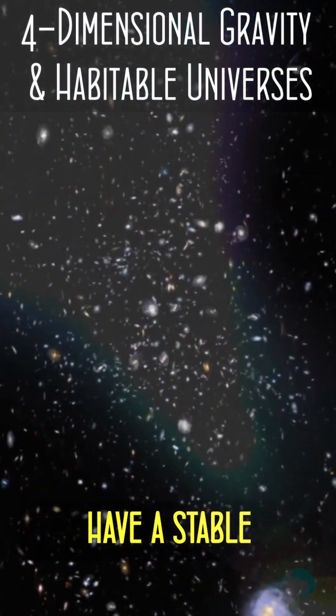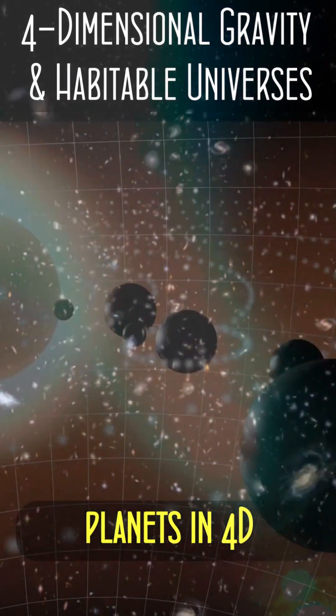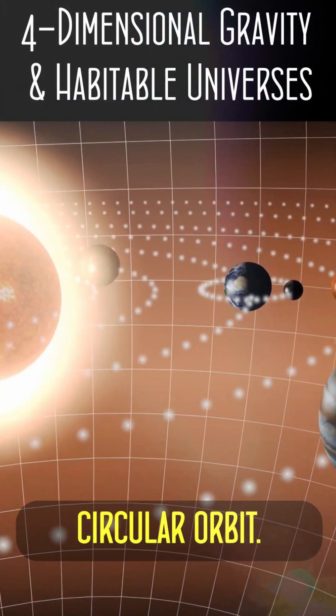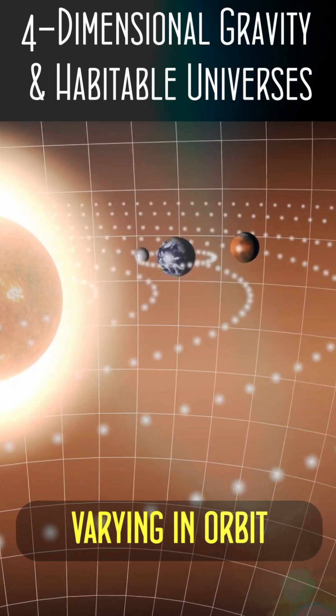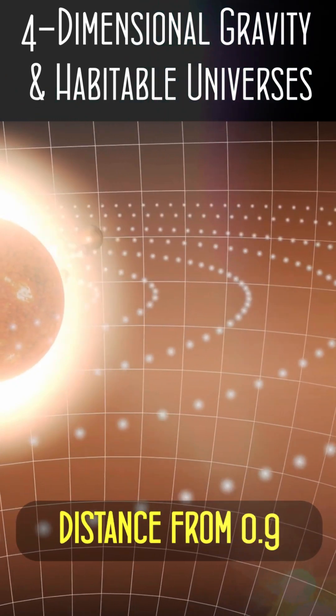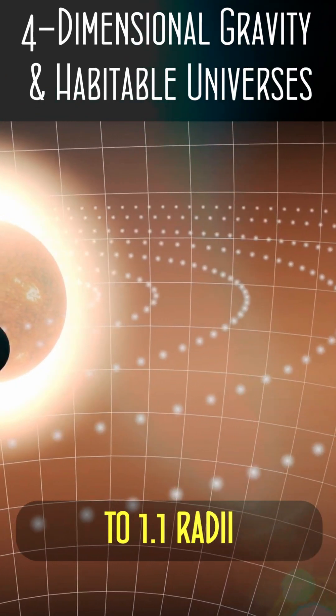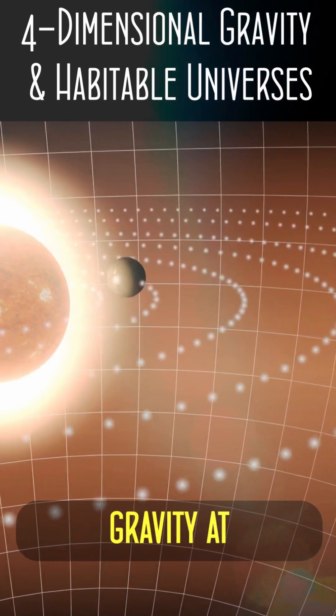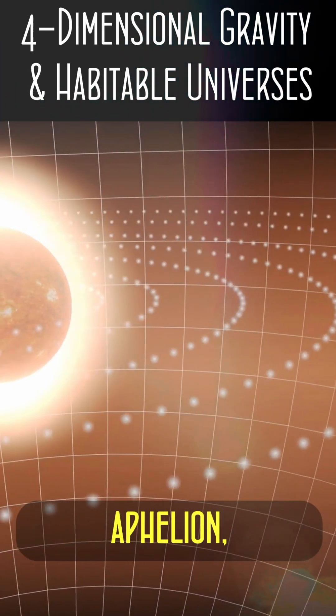it is virtually impossible to have a stable orbit or habitable planets in 4D that's not a perfect circular orbit, since an object varying in orbit just 10% in distance from 0.9 to 1.1 radii would experience roughly double the sunlight and gravity at perihelion than aphelion,